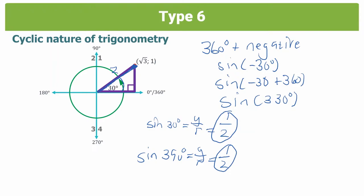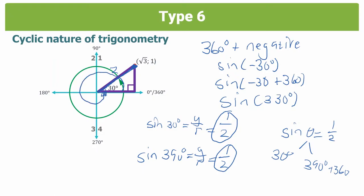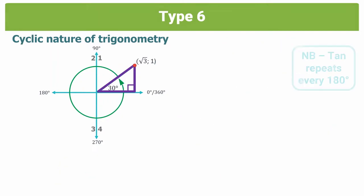So in a question, if you were told that sine theta equals a half, your value for theta could be 30 degrees, or it could be 390 degrees. You could even add 360 to that to make 750 degrees. You can go around an infinite number of times and the sine of that angle would still equal a half. This is why we need a general solution — because if you wanted to find the value of theta, you could have an infinite number of solutions. Also remember that tan repeats itself every 180 degrees, as opposed to sine and cos which repeat every 360 degrees.